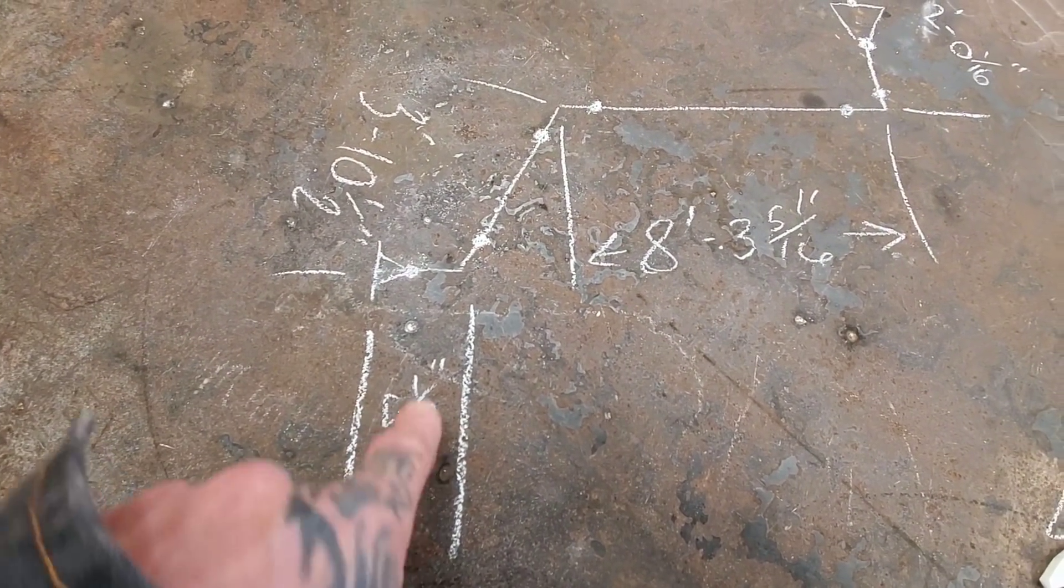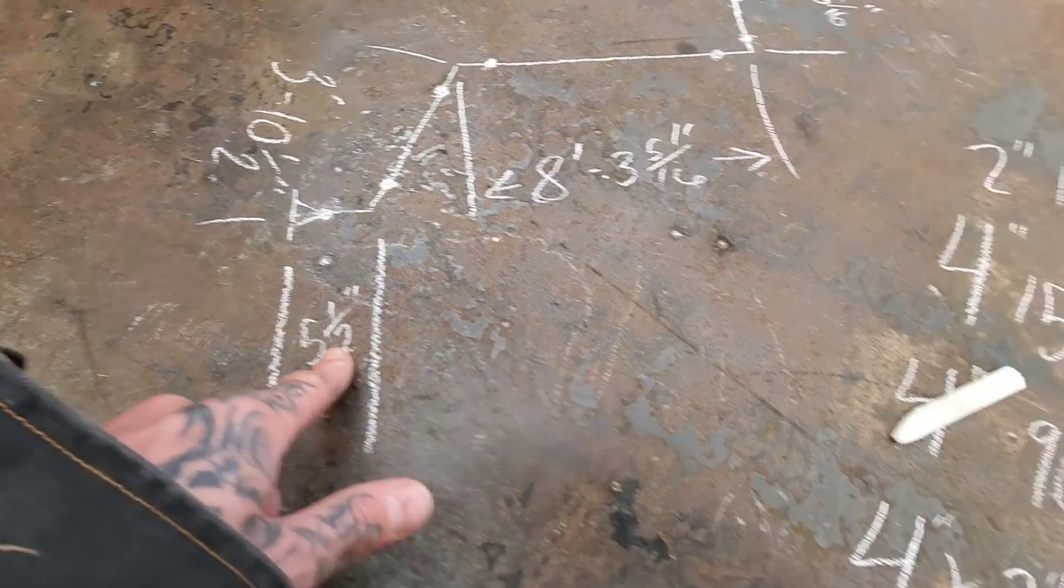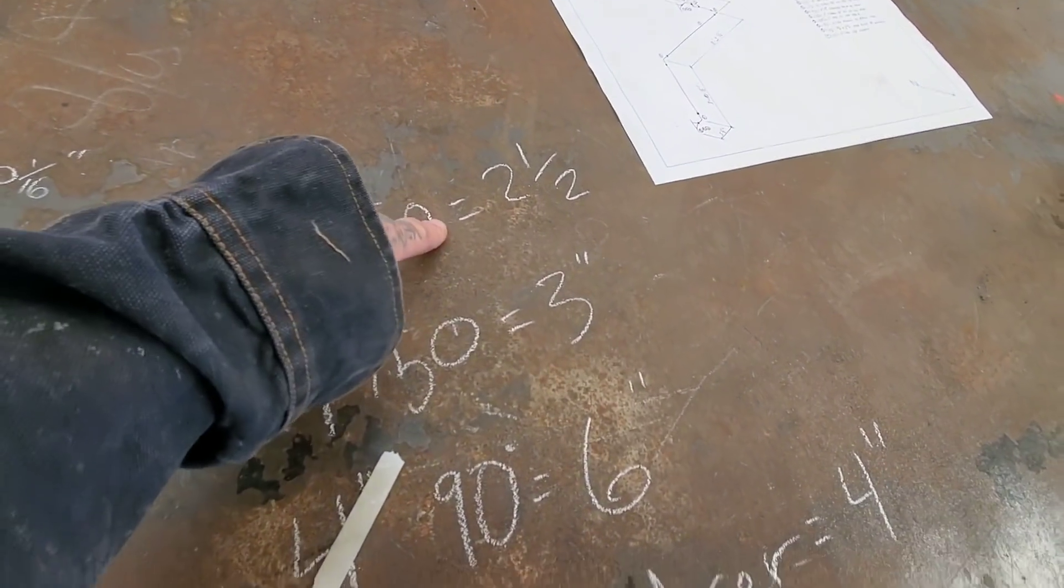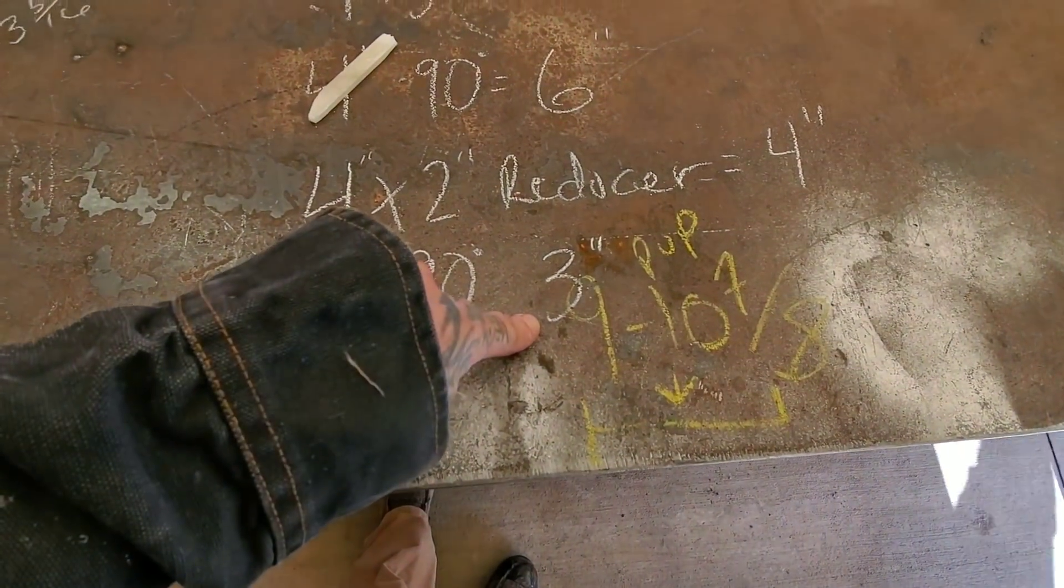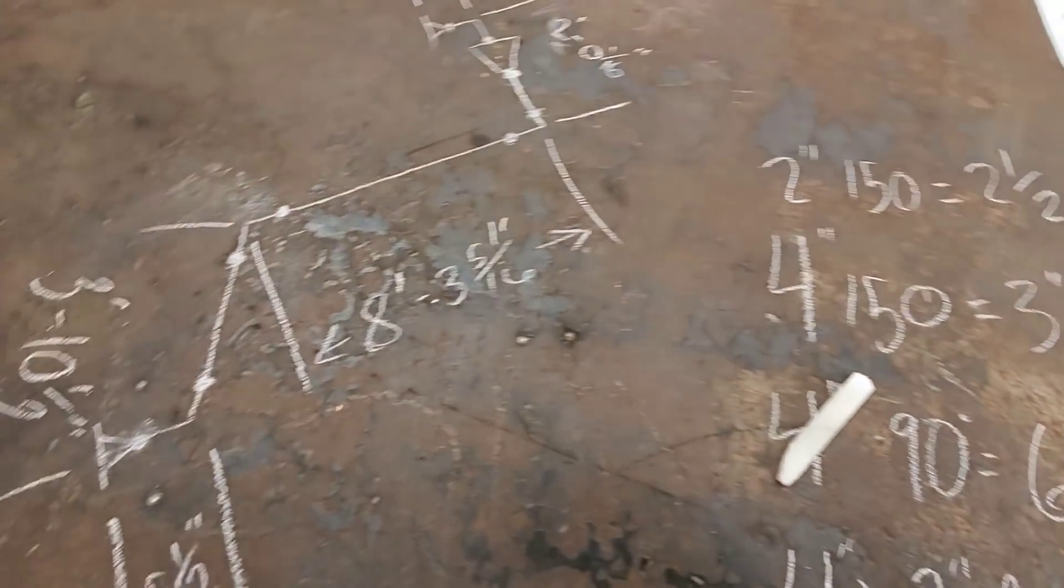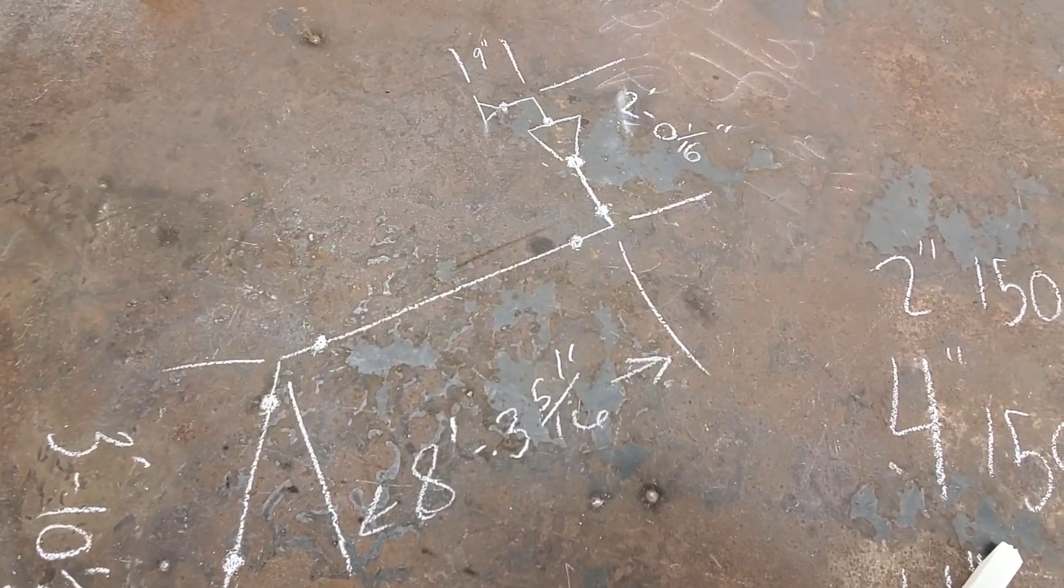This is a two inch 150 plus a two inch 90 long radius equals five and a half inches. So two and a half plus three inches equals five and a half, that's fitting to fitting.